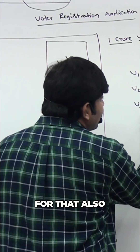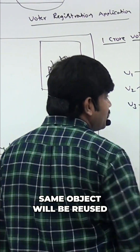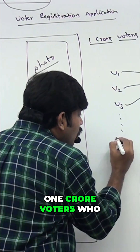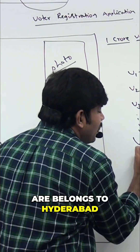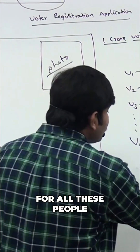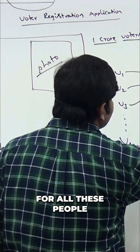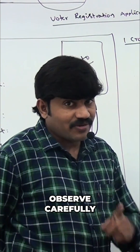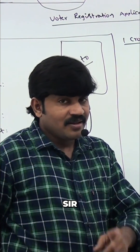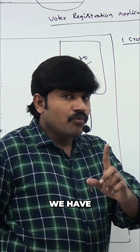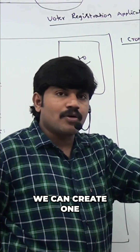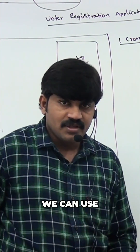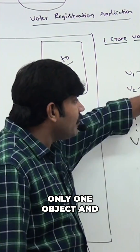A person is coming for that — the same object will be reused. Now, one crore people who belong to Hyderabad: for all these people, what is the city name? Hyderabad only, right? Now observe carefully — we can create one crore Hyderabad objects and use them, or we can create only one object.